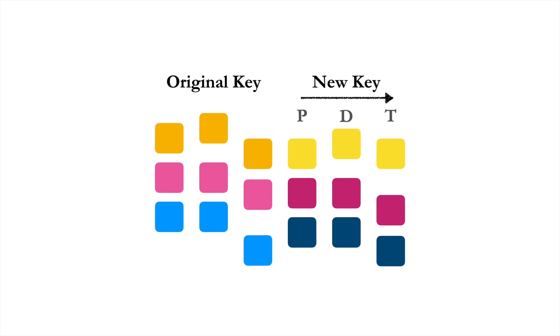If possible, the pre-dominant chord of the new key should be used as a pivot. That means if that chord is also available in the old key without alteration, it can serve as the turning point and then allow the three-step progression—pre-dominant, dominant, tonic—to establish the new key.